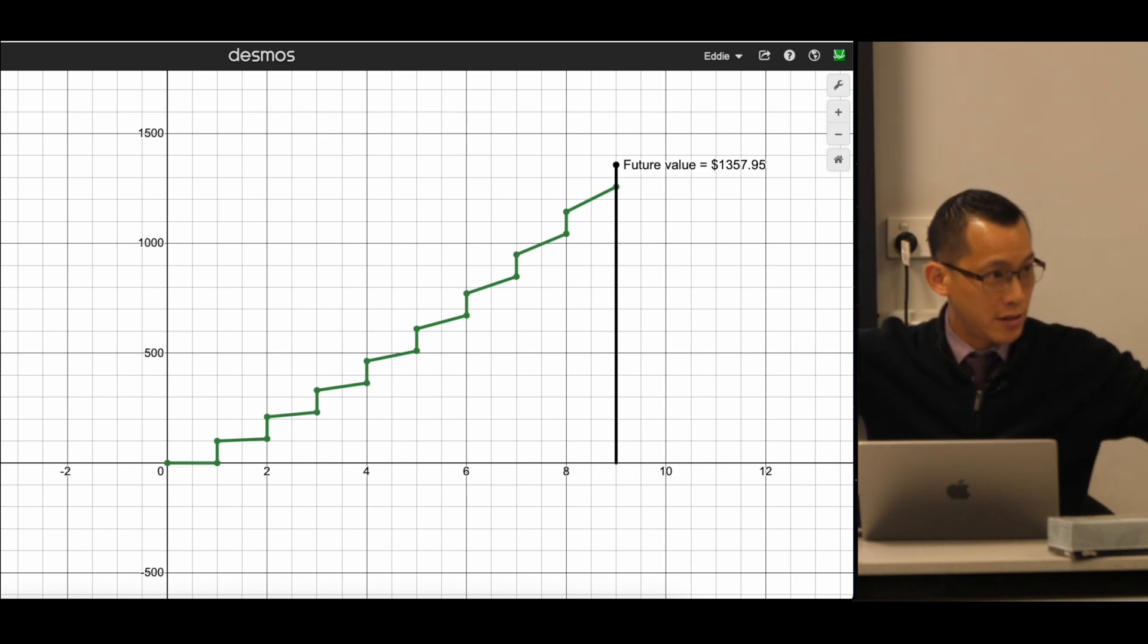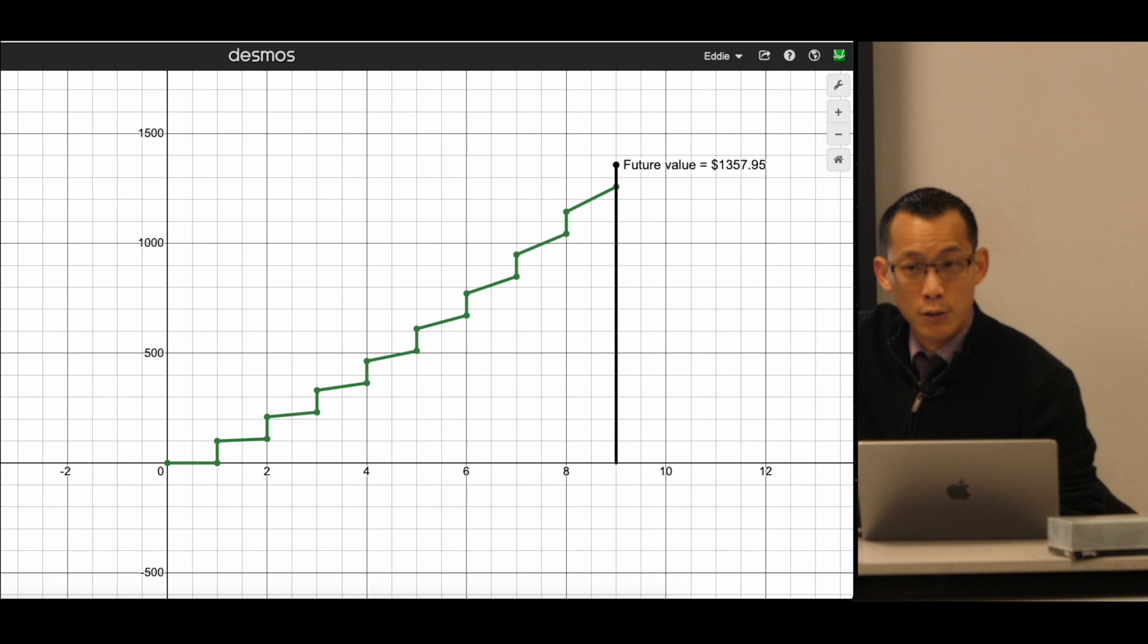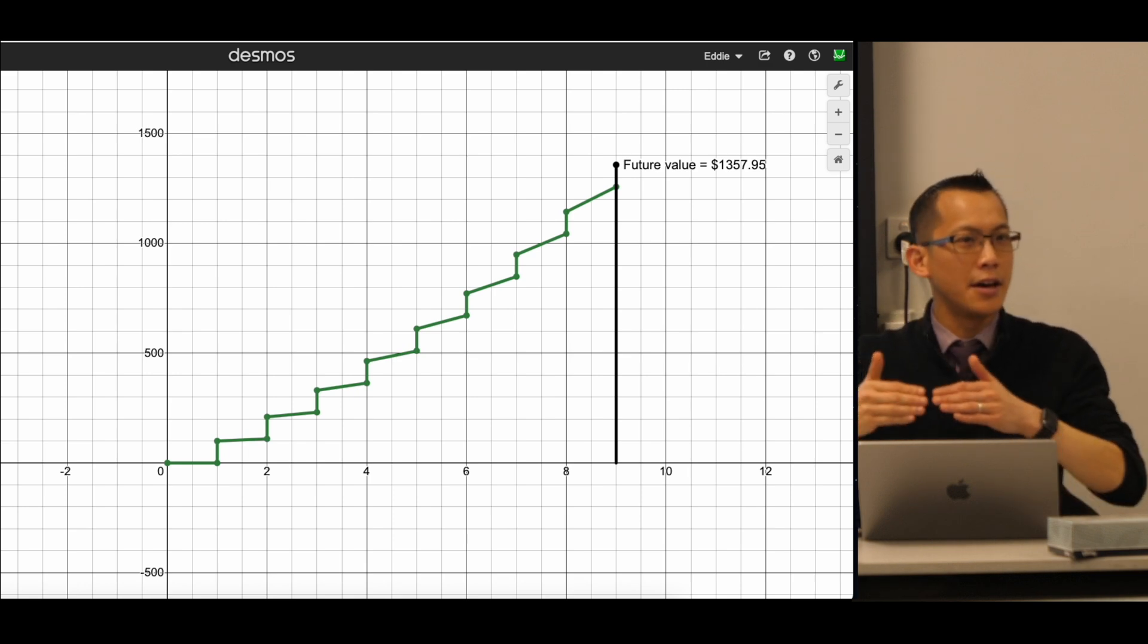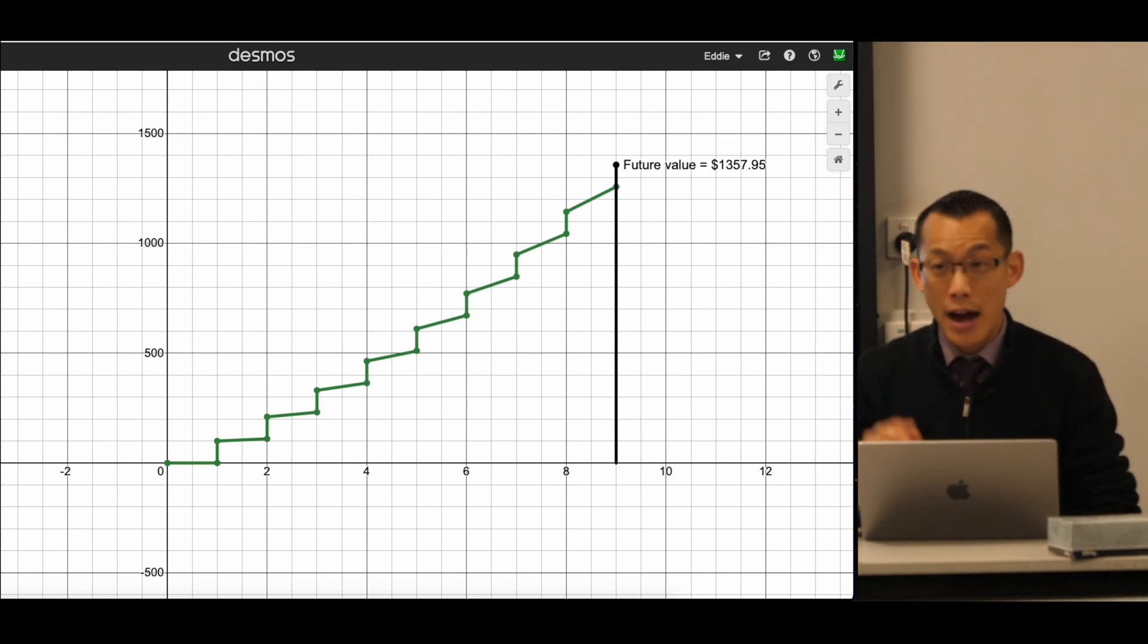Forget about geometric series for a second. Just have a look at the formula. Look at the function. What kind of function is that? It's not a trig function. It's not a polynomial. I mean, what kind of function is it? Say it louder, Otava. It's exponential. The x is in the index. So now you know what an exponential looks like. When I hit go, you should know what shape to expect. There it is.